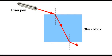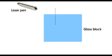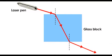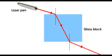Observe the beam of light travelling from air to a glass block. What can you say about the path of the light beam in air and in the glass? Light travels in a straight line in both mediums. When light passes from one medium to another, it changes direction.